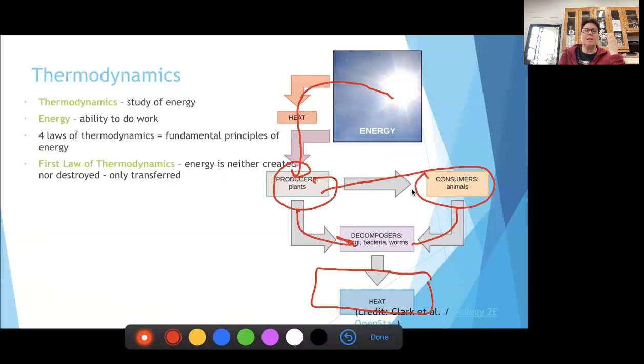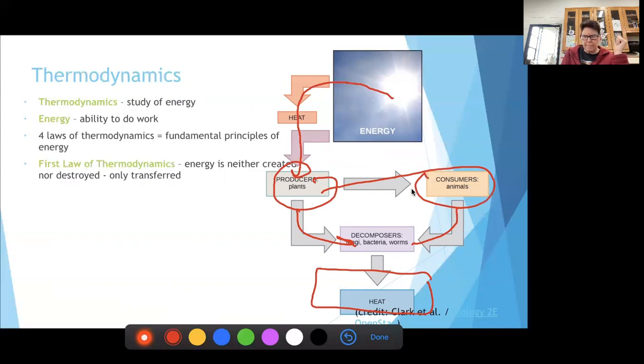We have different types of energy transformations. We have chemical energy where we're taking the energy in the food we eat, which is also potential energy stored in the form of chemical bonds, those covalent bonds in sugar and fat, and we can use that to make ATP.